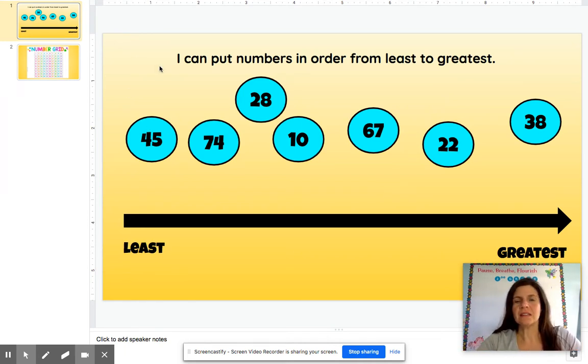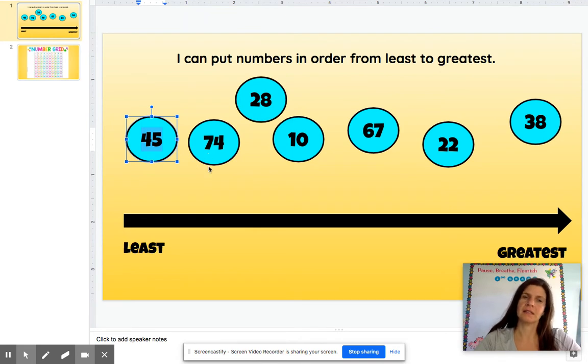One of the things, first thing we do is we look at the tens place. The tens place is this number right there. See the number in front. So here's the four, there it's the seven, two, one.